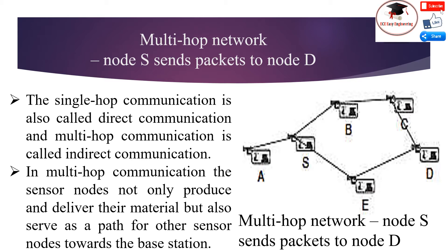In multi-hop communication, a sensor node not only produces and delivers data but also serves as a path for other sensor nodes toward the base station. An intermediate node must decide to which neighboring node an incoming packet should be passed so that it eventually reaches the destination. For example, node S sends to node D through a number of intermediate nodes. This act of passing on is called forwarding.